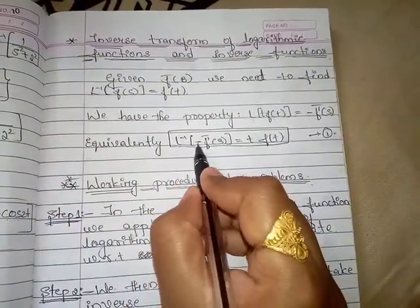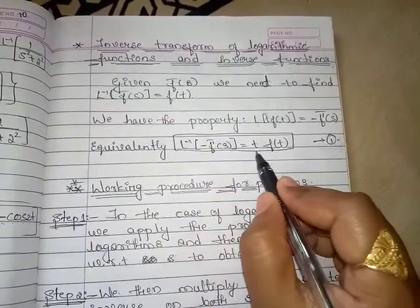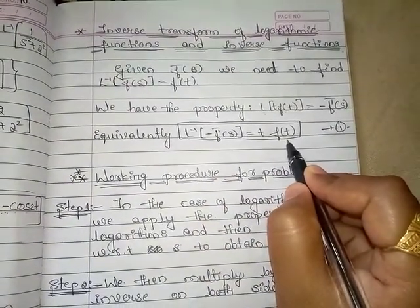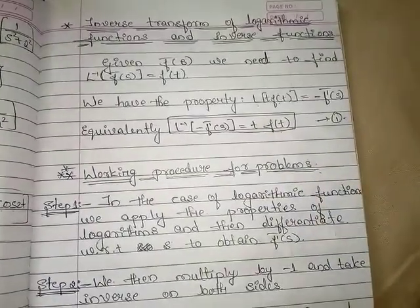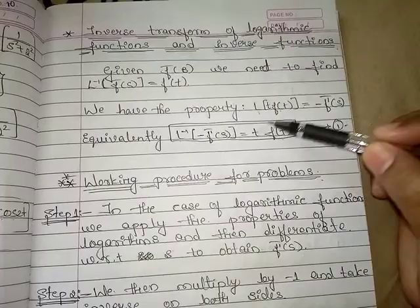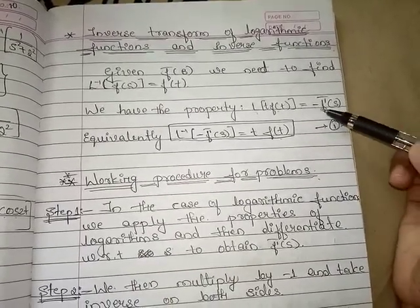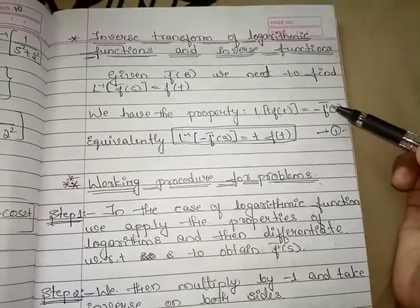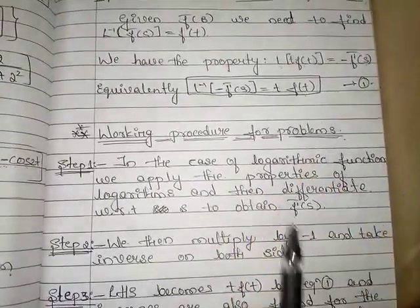Equivalently, this can be written as L⁻¹{-F̄'(s)} = t·f(t). In Laplace transform we have studied four properties, and this is one of them: the Laplace transform of t·f(t) is -F̄'(s). We have to use this result while solving the examples.